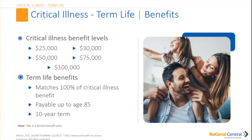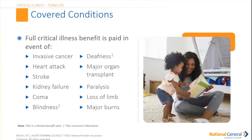The full critical illness benefit is paid for: invasive cancers, heart attack, stroke, kidney failure, coma, blindness, deafness, major organ transplant, paralysis, loss of a limb, or major burns. If they don't fall within this perimeter, it is not going to be a covered benefit.